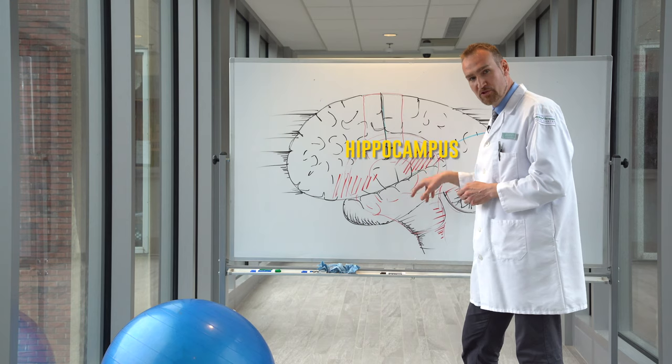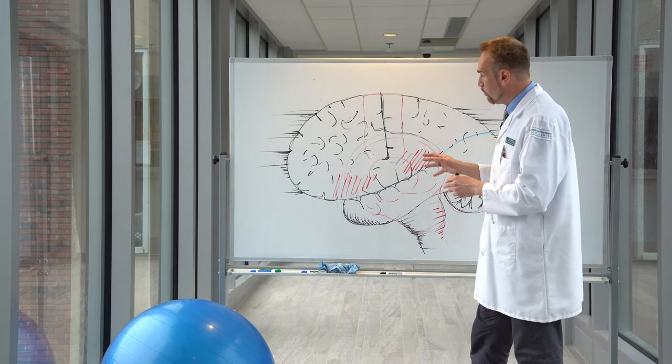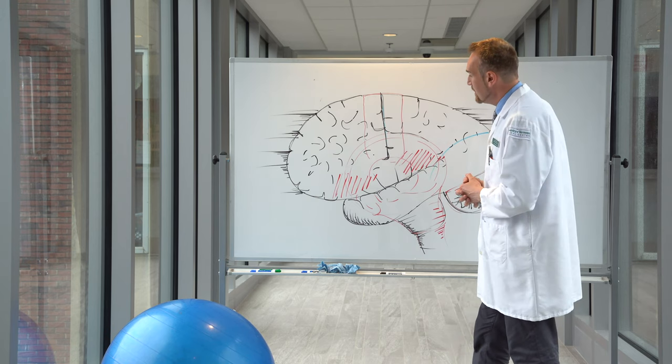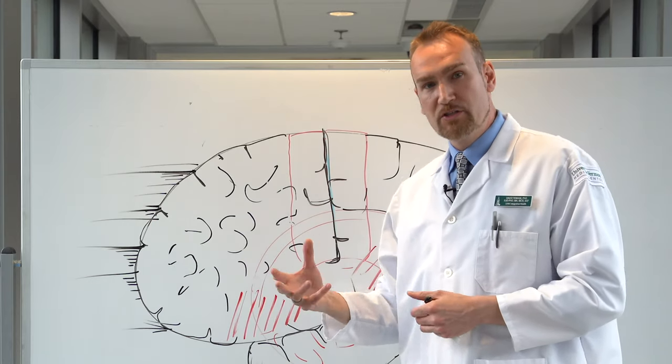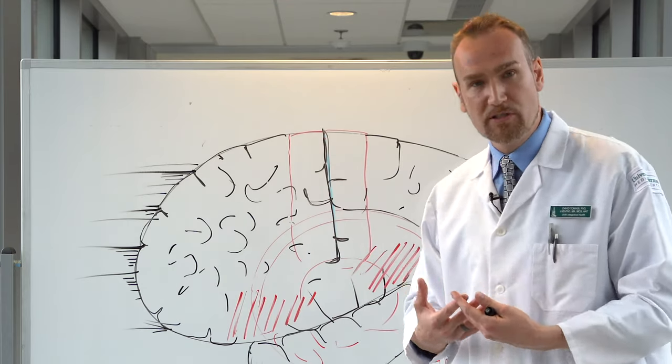Furthermore, our hippocampal structure are also responsible for memory production and retention. So what we have noticed in the scientific literature and our experimentation is that these two parts of the brain need to communicate appropriately in order for us to perceive the world in a positive and nurturing way.